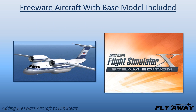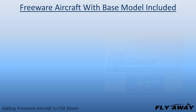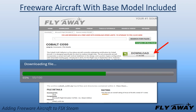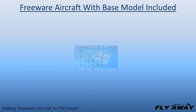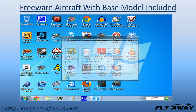Adding a freeware aircraft with base model included is a multi-step process, but fairly simple when you know how it's done. Choose an add-on aircraft from FlyAway Simulation and download it by clicking on the Download button. Your browser will show the download progress and estimate the remaining time. Open your newly downloaded file — it should be on your Windows desktop or in your Downloads folder.